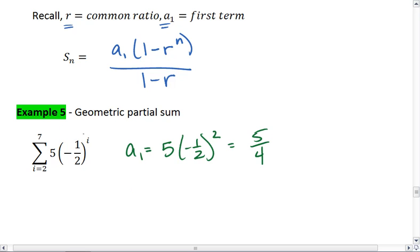Then we can see that since negative 1 half is the base of our exponent, then that must be the common ratio. So r equals negative 1 half. At this point, the last thing we need to recognize is that because we go from 2 to 7, not 1 to 7, that we actually have 6 terms. So n equals 6.